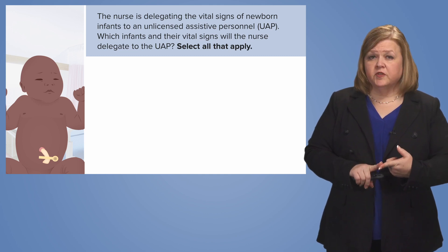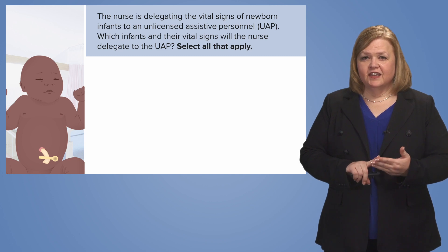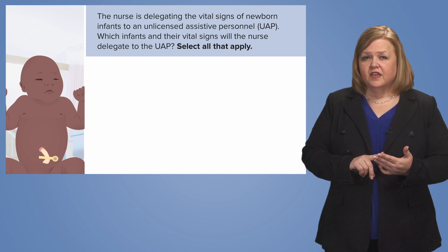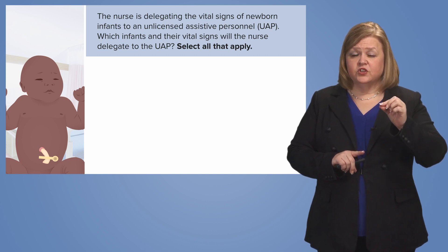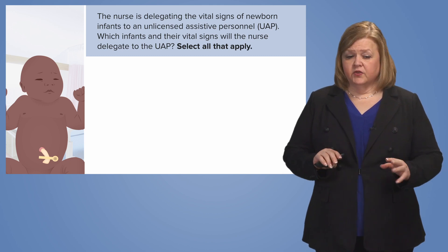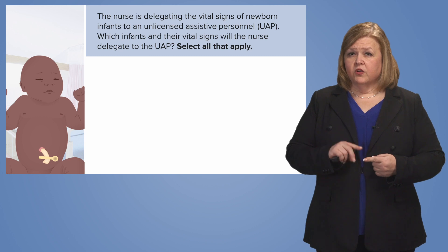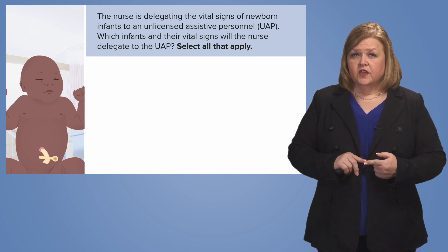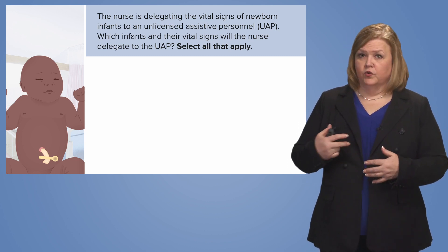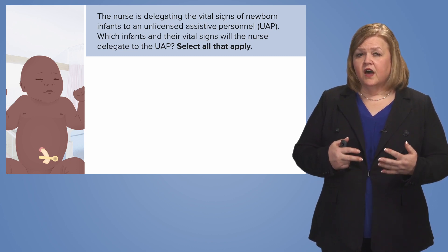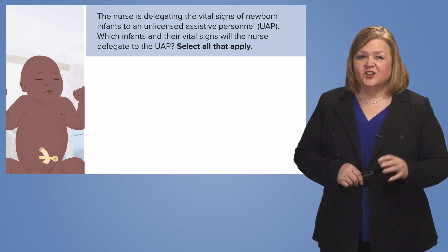The nurse is delegating vital signs of newborn infants to a UAP — is that possible? Yes. A UAP who has been trained on that unit can take vital signs of newborn infants. It needs to be an appropriate assignment. If a patient is unstable, that needs to be a nurse — an RN, not a UAP. RNs are within their scope of practice to do detailed assessment. I'm only going to ask a UAP to take vital signs on a patient who is stable, whether they're a neonate or an older patient. If the patient is unstable, the RN needs to be in the room.